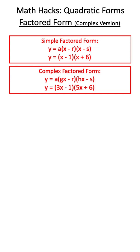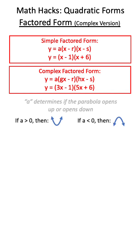Now, what information can we get from complex factored form? A still determines if the parabola opens up or down.